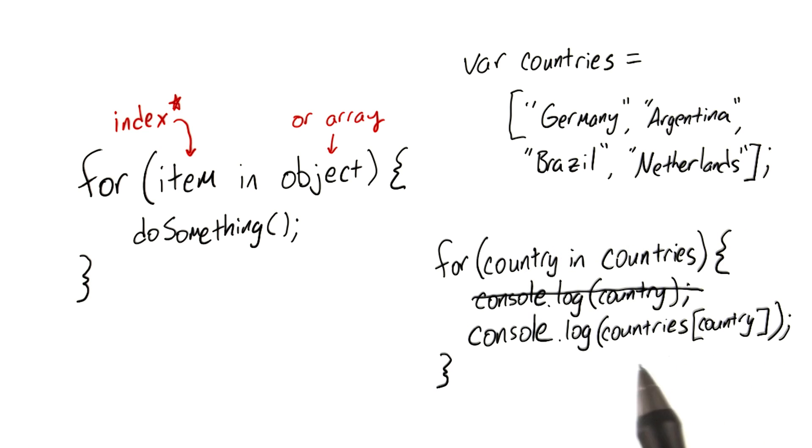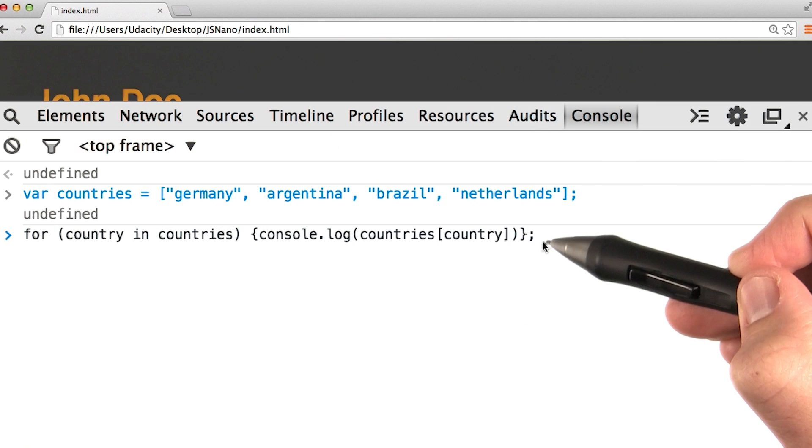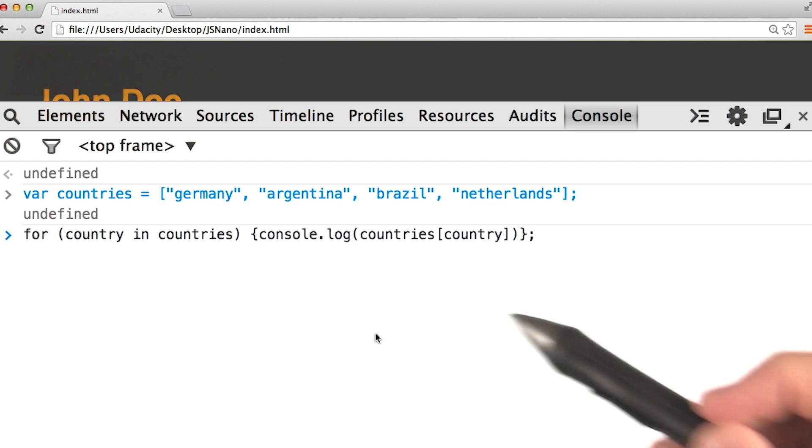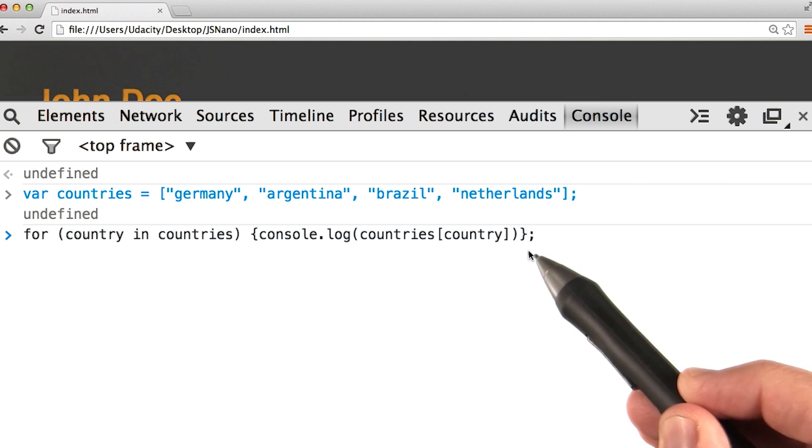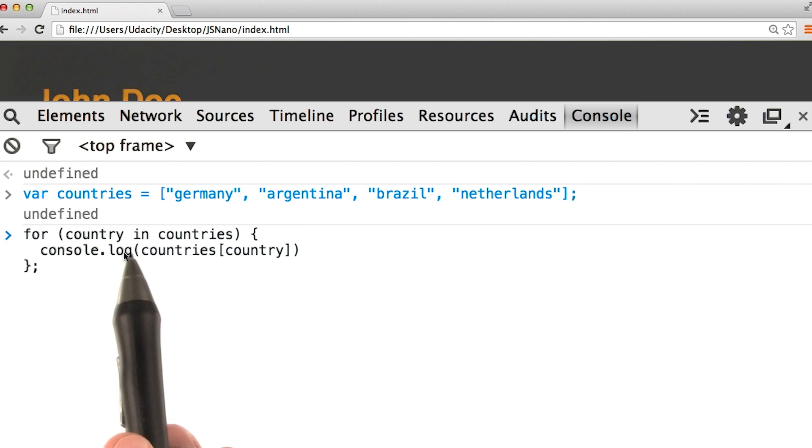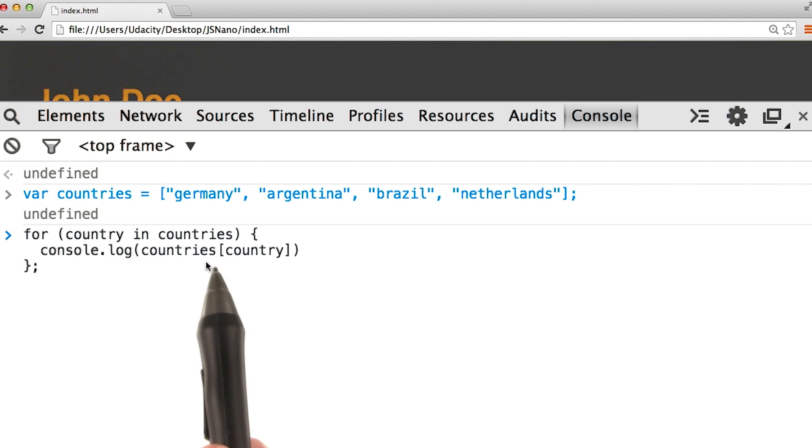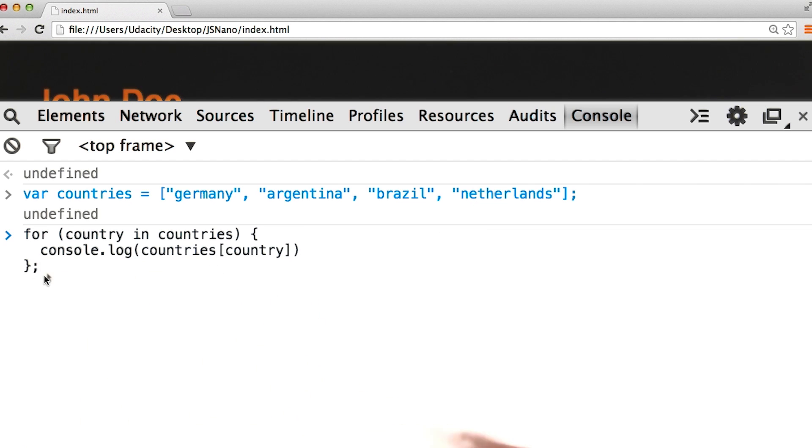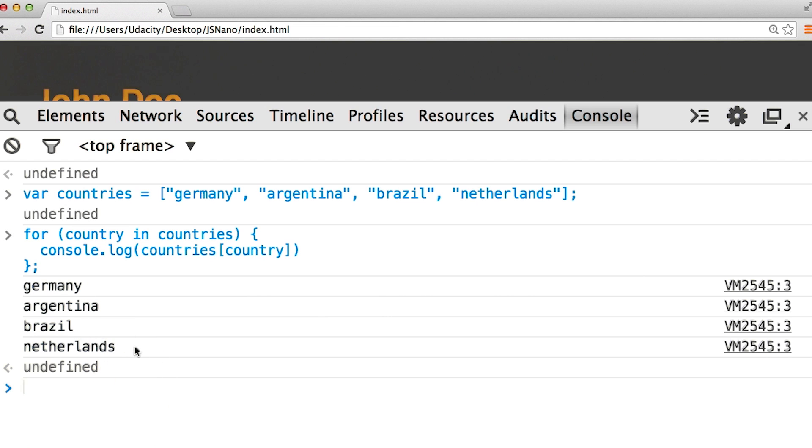Instead, we should have console.log countries of the index country. Let's see if this is correct. So here's our for-in loop in one line of code. By using shift-enter, we can actually put this in a much nicer format. So we see for country in countries, console.log countries[country]. And pressing enter, we see Germany, Argentina, Brazil, and the Netherlands.